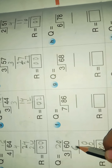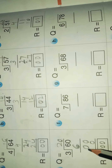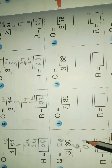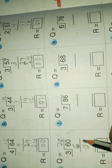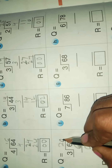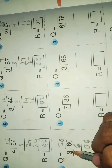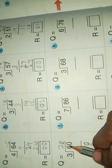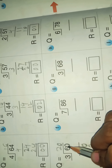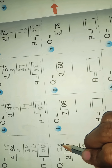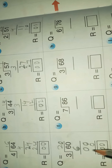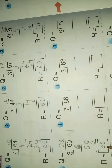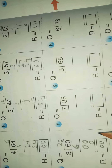Here, 6 minus 6 is 0. Bring down the next digit 0 below. Put 0 here because the divisor 3 goes into the bottom number 0, zero times, therefore put the 0 on top. Multiply 3 into 0 is 0. The remainder becomes 0 and the quotient is 20.